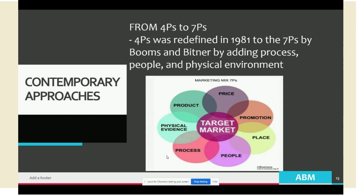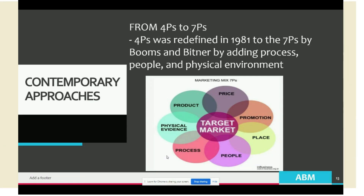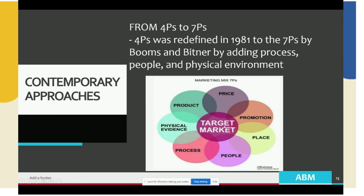The second contemporary approach is from 4Ps to 7Ps. As you already know, the 4Ps include product, price, promotion, and place. It was redefined and three additional Ps were added: process, people, and physical environment.